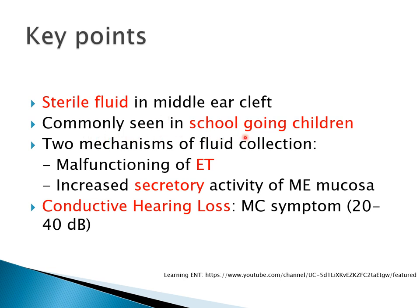It is commonly seen in school-going children. In questions, when the word 'school going child' is mentioned, we should get the idea that it may be secretory otitis media. Rarely it can also be seen in adults. Broadly there are two mechanisms: one is malfunctioning of the eustachian tube. The reason can be any pathology in the nasopharynx, like adenoids in children or malignancy in adults.